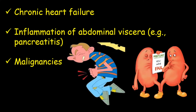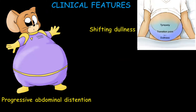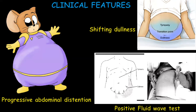If we talk about the clinical features of this patient, it has progressive abdominal distension, shifting dullness, and a positive fluid wave test. Sometimes abdominal pain may be present in ascites due to an acute inflammatory etiology.